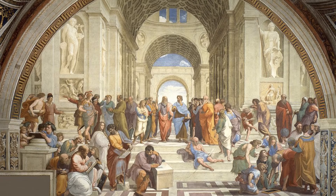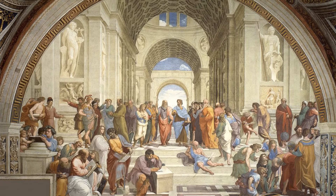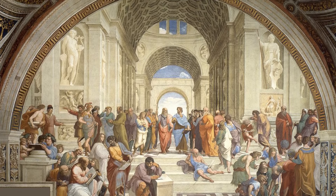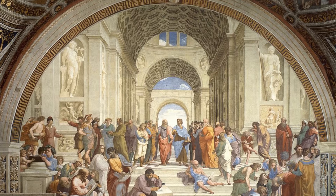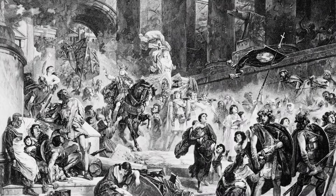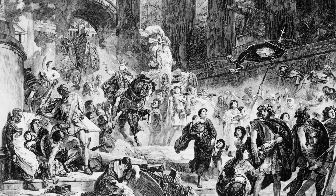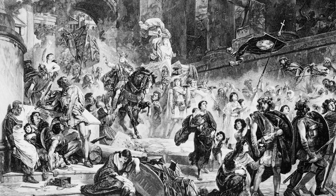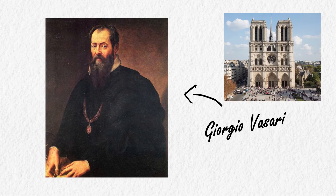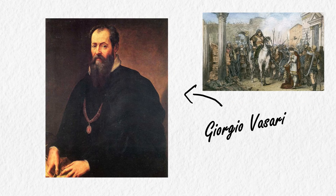The Renaissance held classical Greek and Roman architecture and culture in high esteem. So by calling this style Gothic — referencing the Germanic tribes who were basically the primary cause of Rome's downfall — it carried a negative connotation. Basically, Vasari viewed this medieval style as barbaric, like those Germanic tribes.